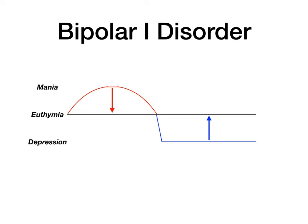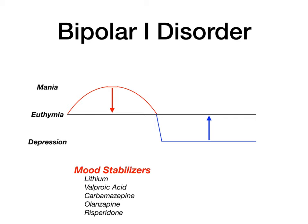To fix the manic portion, mood stabilizers used include lithium, valproic acid, carbamazepine, olanzapine, and risperidone. Even though they're all called mood stabilizers, they come from different categories: lithium is its own category; valproic acid and carbamazepine are anti-epileptic drugs used as mood stabilizers; olanzapine and risperidone are atypical second-generation antipsychotics used as mood stabilizers.